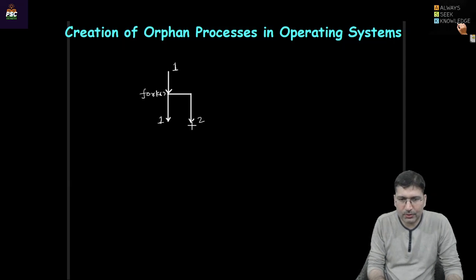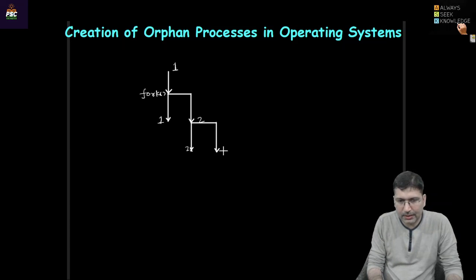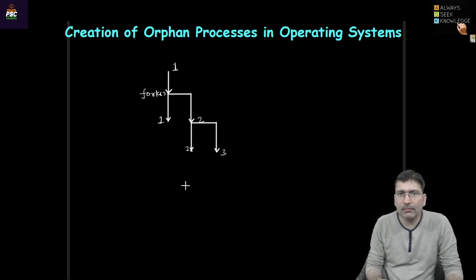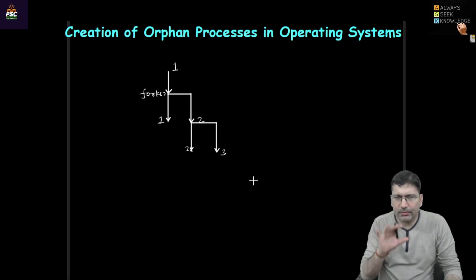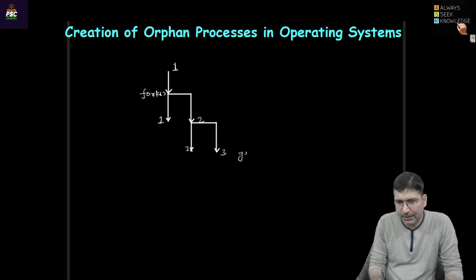If we assume that process two is also calling a fork, this will generate a child process. So process two is executing, and a newly created child is having some process ID. If we call another fork from process one there may be another child process. In that manner the overall hierarchy you can visualize. Now if we print the parent process ID from inside process three — using getppid — we can see its parent.